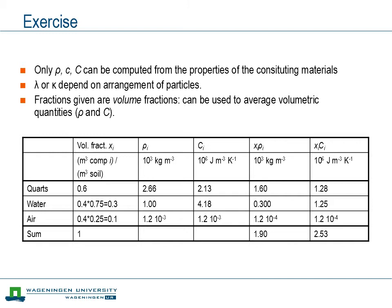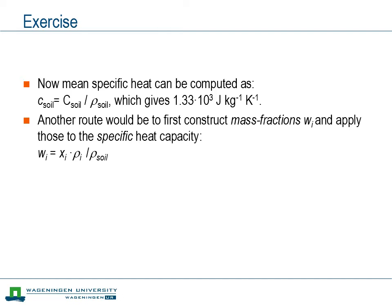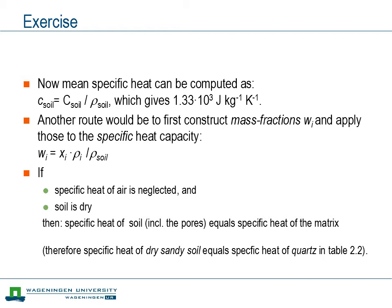If we know the volumetric heat capacity and the density of the soil, from those together we can also compute the specific heat capacity. There would have been another route: first constructing the mass fractions and then applying those to the specific heat capacity, which would give exactly the same answer. Finally, if we have a soil and neglect the specific heat of air — which is quite small — and if the soil is dry, then the specific heat of the soil, including the pores, is exactly equal to the specific heat of the matrix.